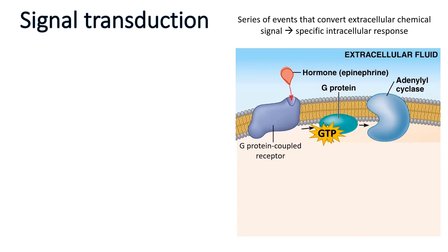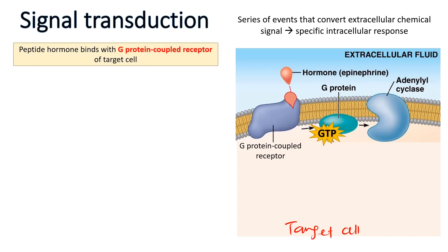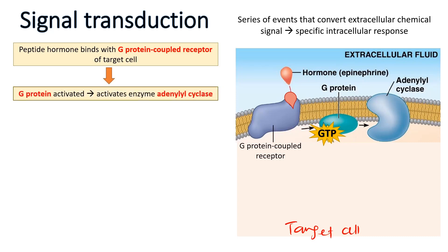Once epinephrine reaches the target cell, it binds to the G-protein coupled receptor, which is the receptor on the cell surface located on the plasma membrane of the target cell. This binding to the G-protein coupled receptor will then activate the G-protein. G-protein indicates guanosine because it will bind to GTP once activated. The G-protein will then change shape, allowing it to bind and activate adenylyl cyclase.